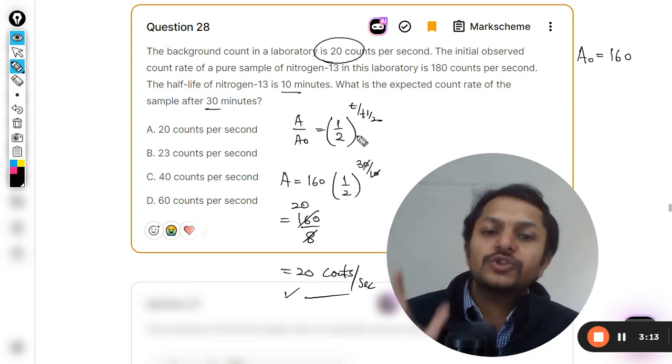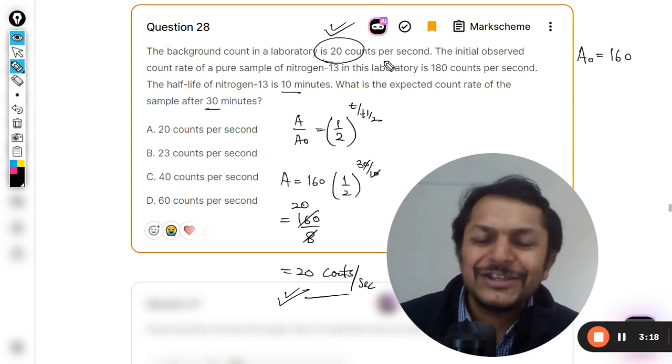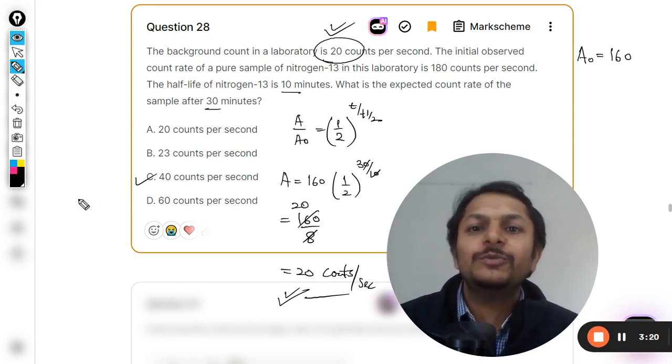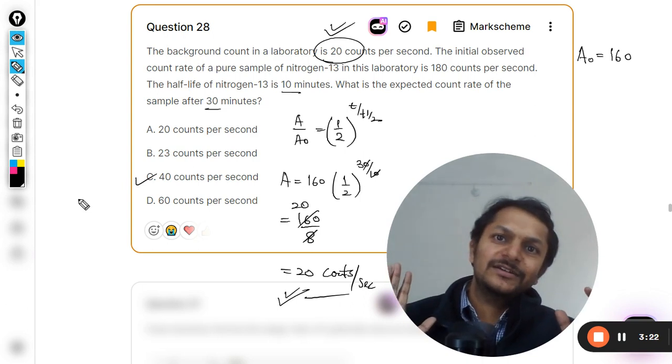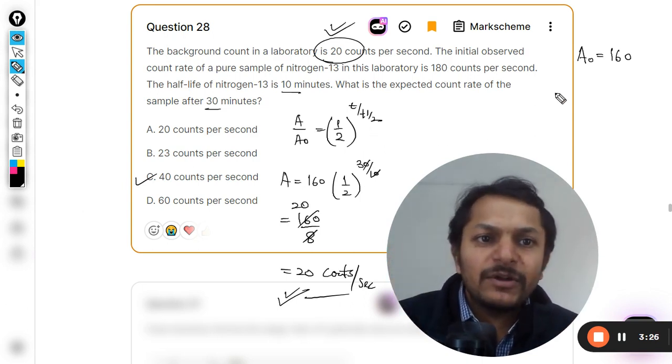But your device will not be able to measure this, why? Because there is a background count of 20 also. So it will measure 20 plus this 20 will also be measured by the device. So your answer is going to be 40 counts per second. Clear?